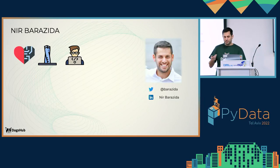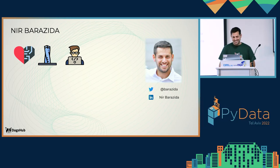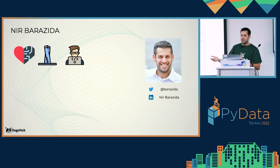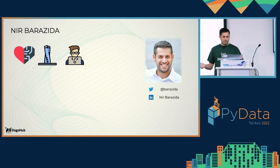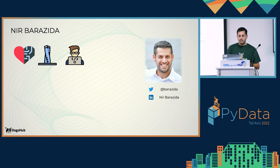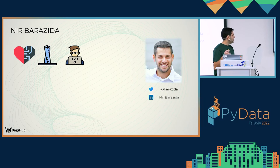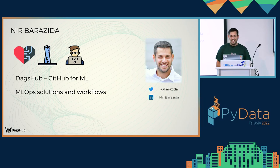A few words about me — I'm Nir Barazida. My background combines structural analysis, computer vision engineering, and MLOps research. I'm leading the MLOps and outreach team at DAGZAB — basically the GitHub for ML. My team is researching and implementing MLOps solutions and workflows for collaborative ML.